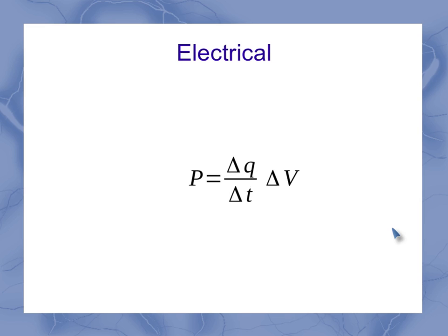And rearranging this just a little bit, I could recognize it in terms of the amount of charge in a specific amount of time. And that amount of charge in a specific amount of time that flows through an electrical circuit is also known as the current. So substituting that in, we get our standard equation here that power is the current times the voltage.